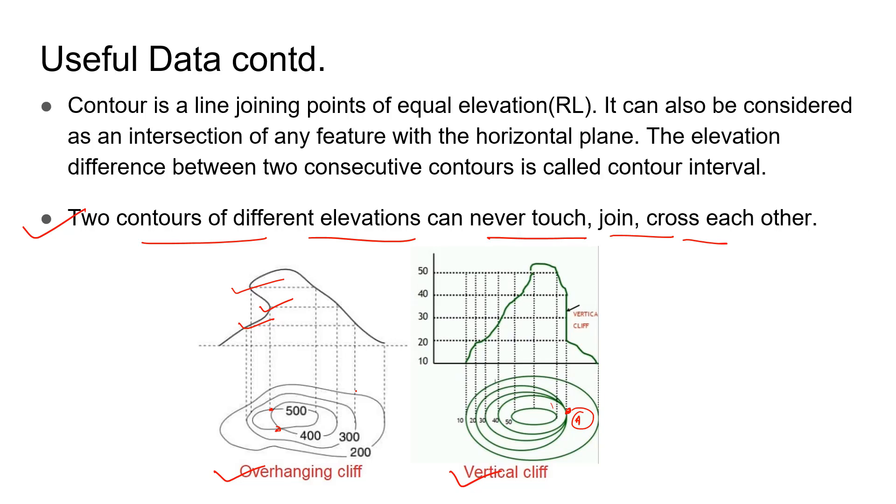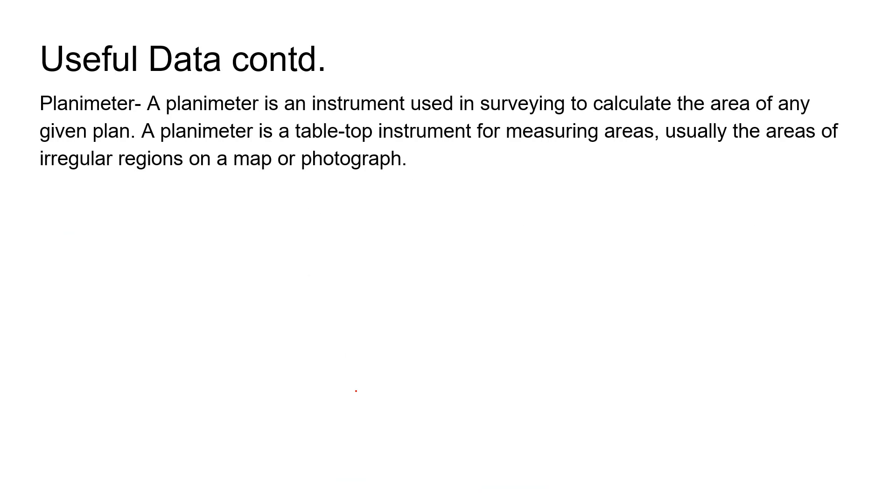Coming to the last statement about the planimeter: A planimeter is an instrument used in surveying to calculate the total area of any given plane. It's normally used for areas that are irregular. If we have a map or photograph of a particular area, using the planimeter we can determine the area of that particular place.